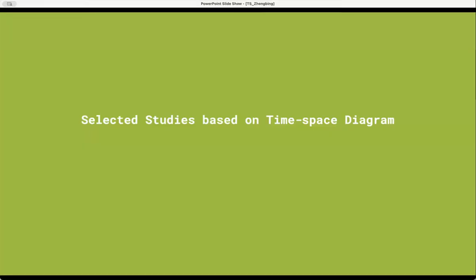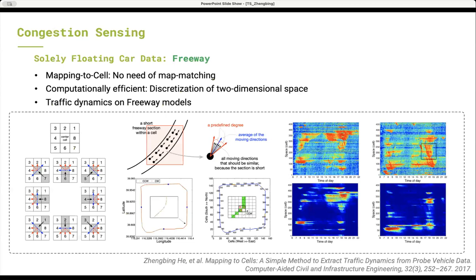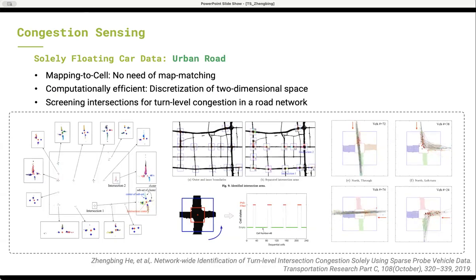Taking this opportunity, I would like to briefly introduce some of my works closely related to time-space diagram. To avoid the difficulty of obtaining high fidelity digital maps and time-consuming map matching, we propose a mapping-to-cell method to sense traffic dynamics on freeway congestion. This is a big data mining method that fully utilizes the characteristic of traffic. As a companion, we extended the mapping-to-cell idea to urban roads and the proposed method could efficiently screen thousands of intersections.